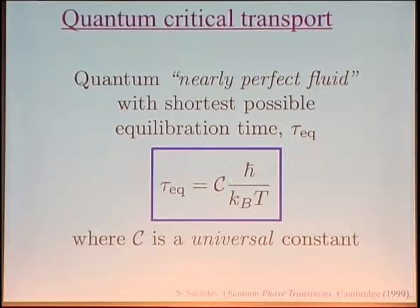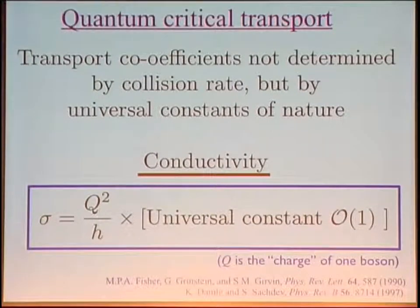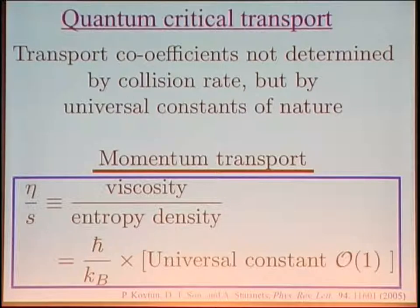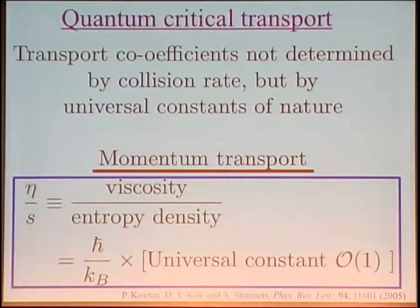Even for very simple systems we don't know the value of C, which depends on the universality class of the conformal field theory. One consequence is that various quantities, for example the electrical conductivity, are determined just by Planck's constant times another universal constant. The shear viscosity also has a figure of merit given by the ratio of shear viscosity to entropy density, equal to Planck's constant times a universal constant. As Damson and collaborators showed, you can compute this universal constant for a large class of super-conformal field theories, and surprisingly it turns out to be a relatively good estimate even for systems quite far from supersymmetry.